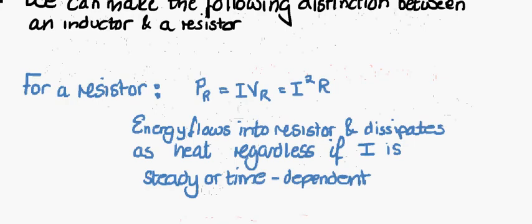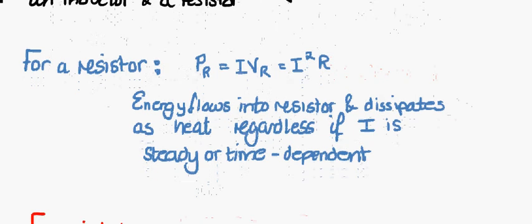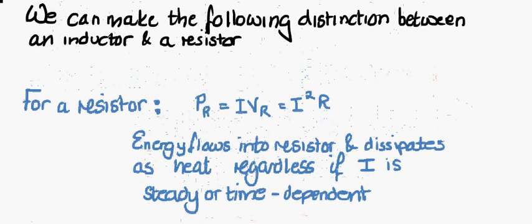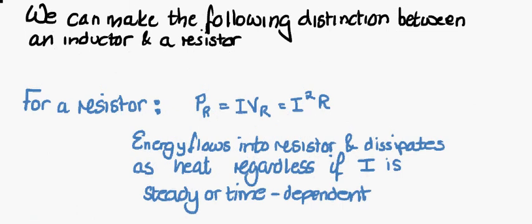Before continuing, it's worth noting a distinction between a resistor and an inductor. For a resistor, we can use the same expression. Power is related to our external source of EMF or the voltage drop associated with our resistor times our current. Energy flows into a resistor and is dissipated in the form of heat. This is regardless if current is steady or time-dependent.